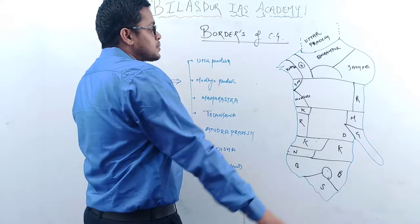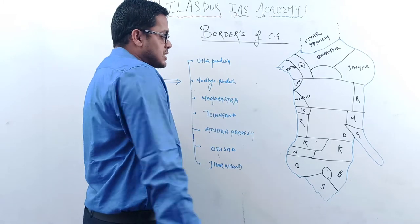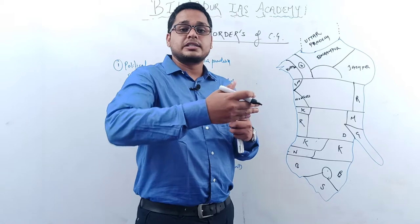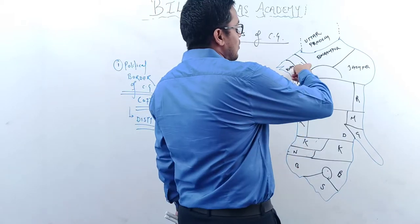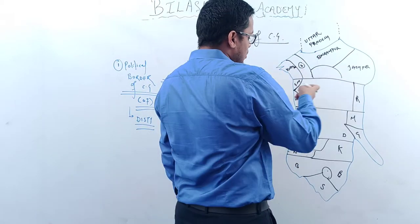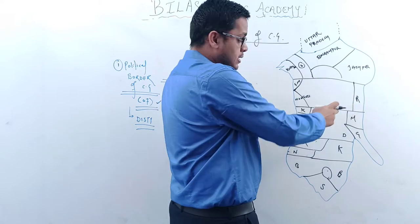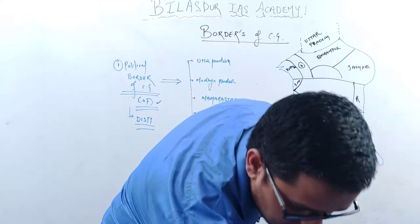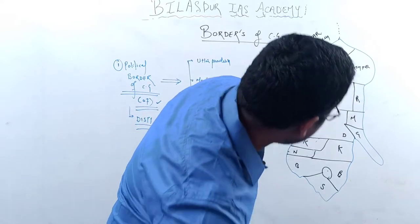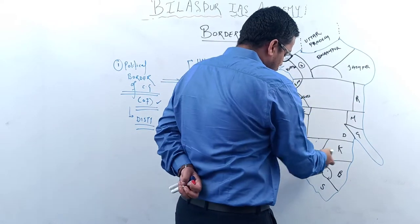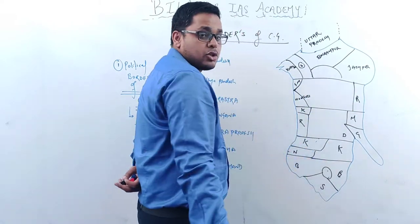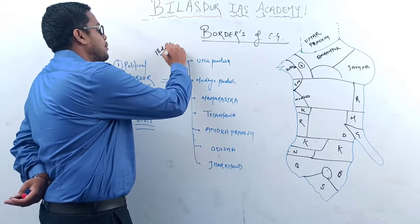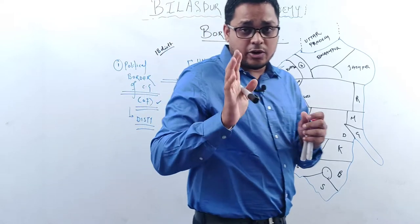So around 18 districts of Chhattisgarh make the border with other states. Out of a total of 28 districts, 18 make the border and 10 districts do not make any border. Those 10 districts which don't make the border are called landlocked districts of Chhattisgarh. In an earlier prelims exam, 9 such districts were asked about, but now we have 10 including the newest one, Bilaspur.